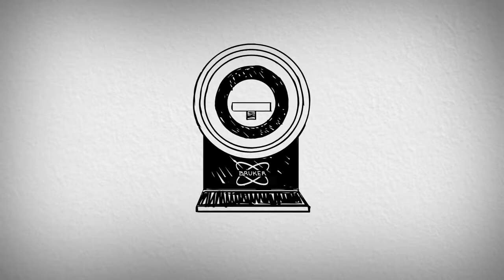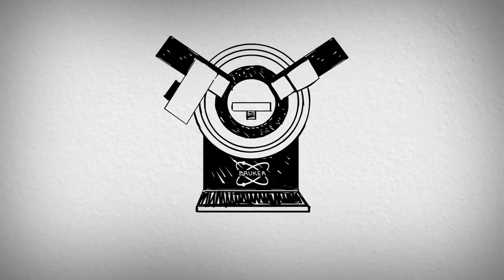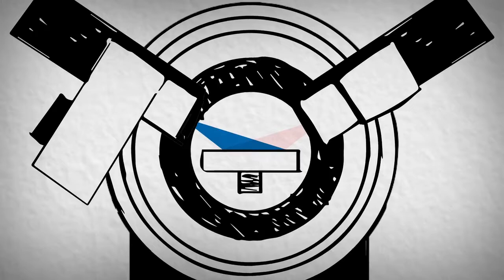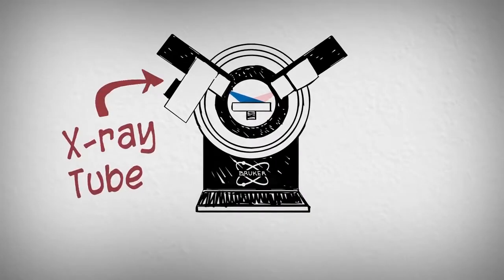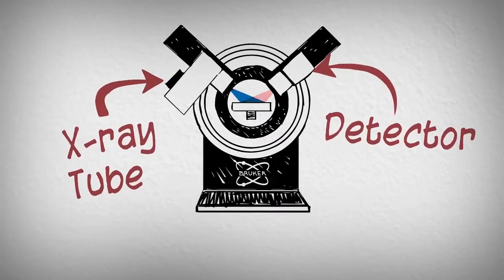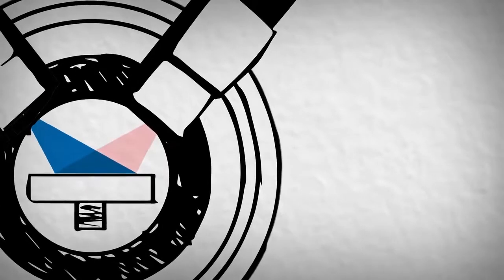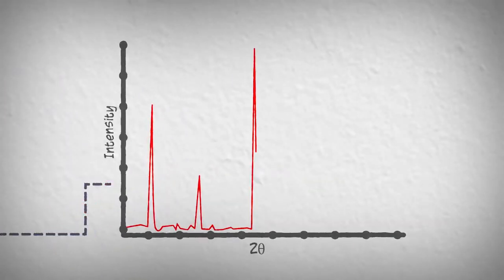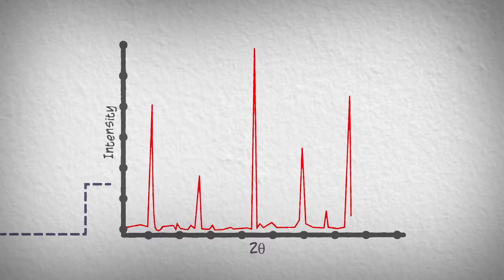In an X-ray diffraction experiment, a sample is placed into the center of an instrument and illuminated with a beam of X-rays. The X-ray tube and detector move in a synchronized motion. The signal coming from the sample is recorded in a graph, where peaks are observed related to the atomic structure of the sample.